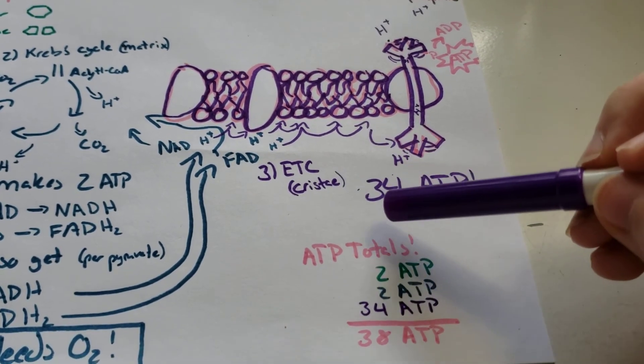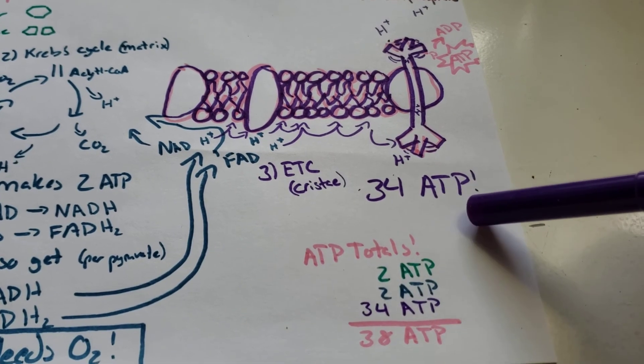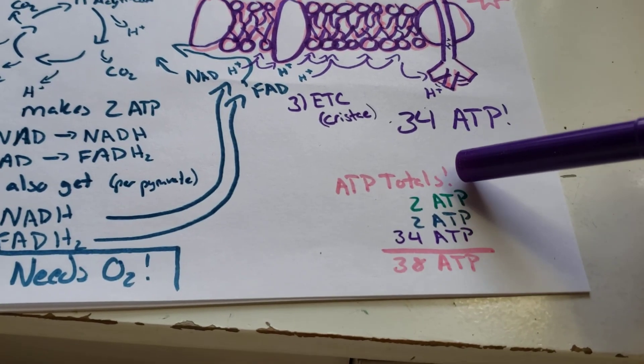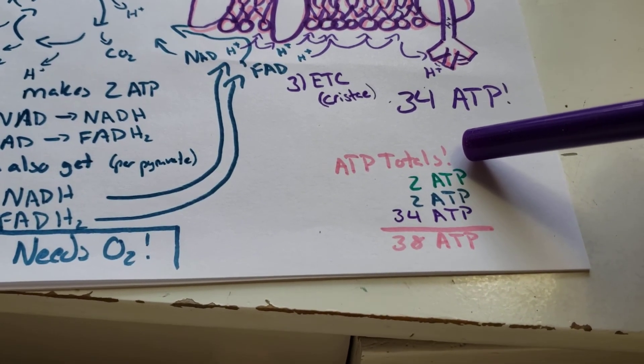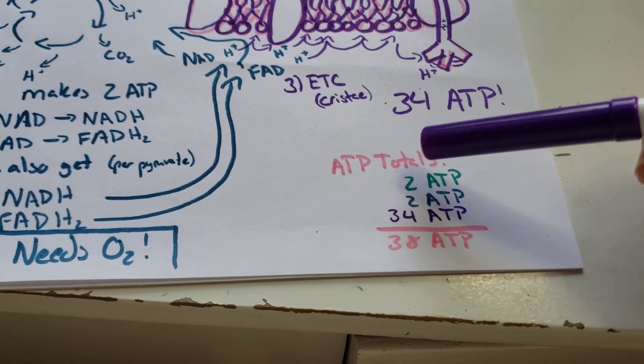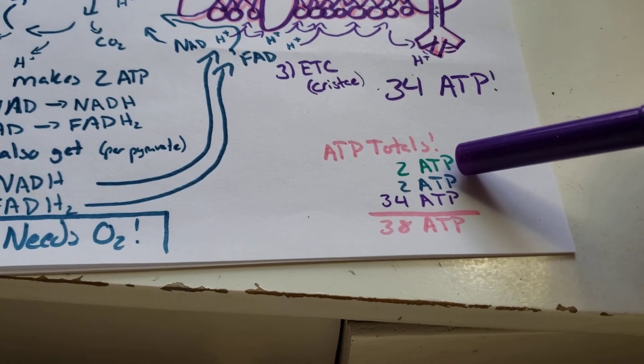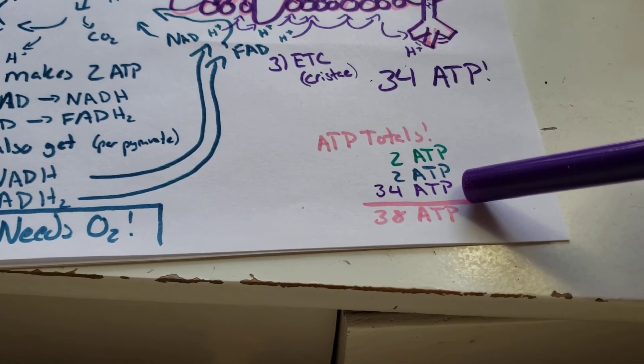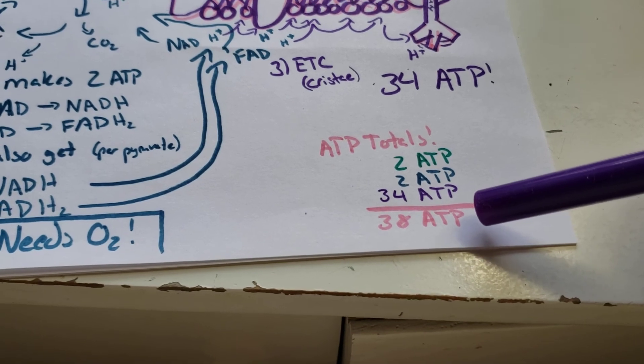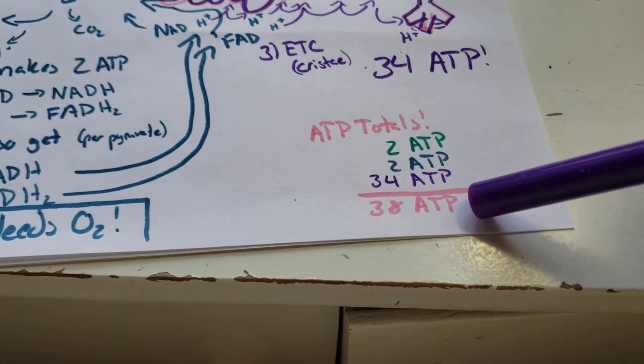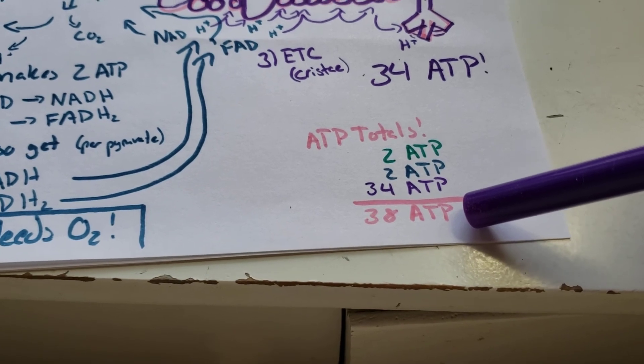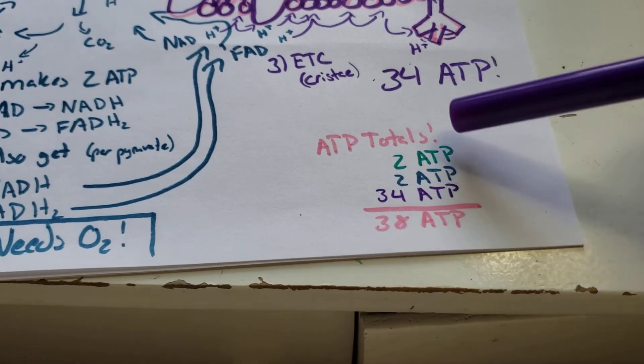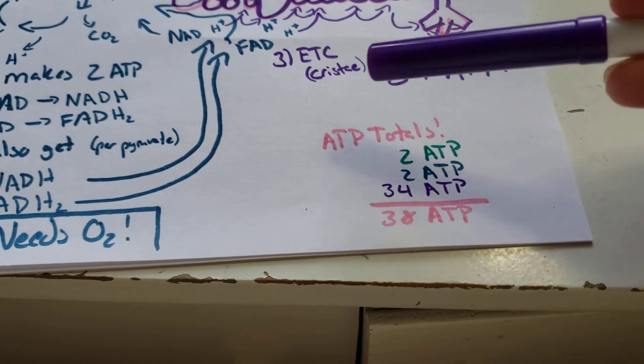If we're counting things up, that means if your body is being as efficient as it possibly can, you make two ATP from glycolysis, you get two from the Krebs cycle, you get 34 from your electron transport chain, and your body in total, when all is said and done from one sugar molecule, will make 38 ATPs or 38 energies. 38 energies, this is what your totals are that you need to know.